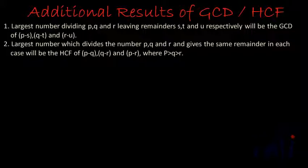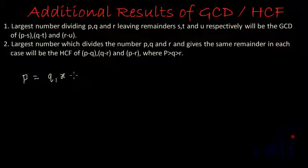Here we are talking about the same number which divides all P, Q, and R. When it divides P it leaves remainder S, when it divides Q it leaves remainder T, and when it divides R it leaves remainder U. Suppose that largest number is X. When X divides P, Q1 times, it leaves remainder S. So P equals Q1 times X plus S.